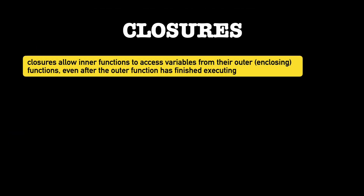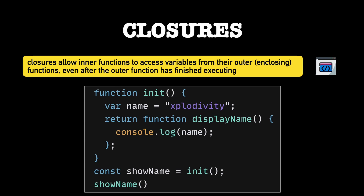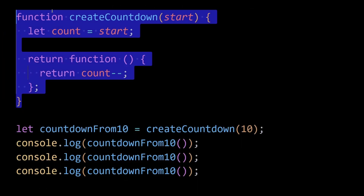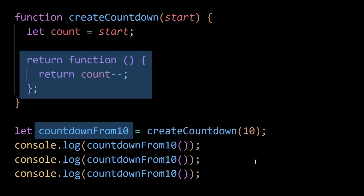Number two is closures. Closures allow inner functions to access variables from their outer functions even after the outer function has finished executing. While closures provide this functionality, they also come with a responsibility to manage memory properly. Consider this example: countdownFrom10 is a closure that holds a reference to the count variable.